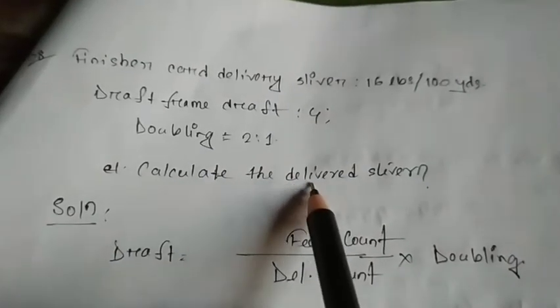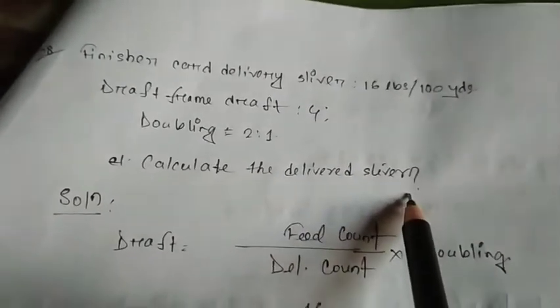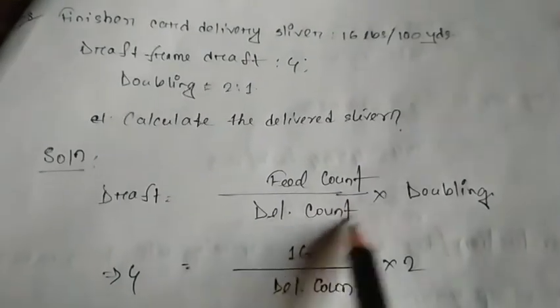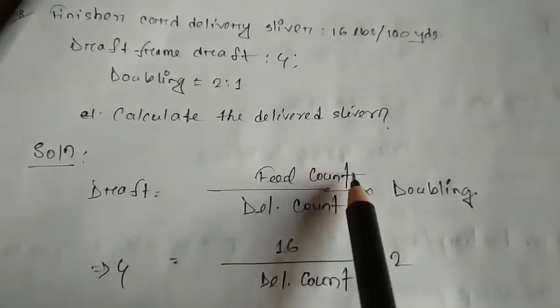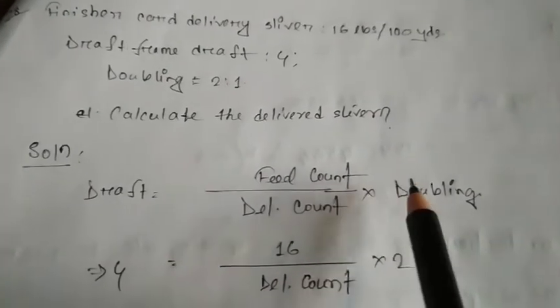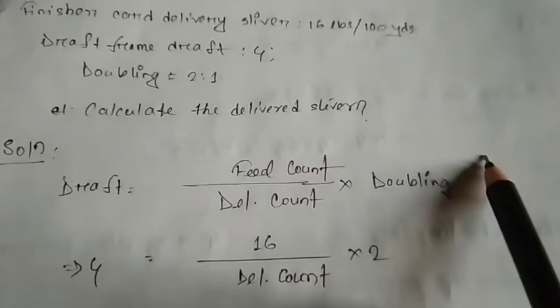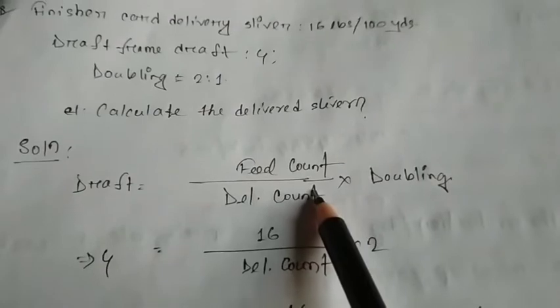Now we will calculate the delivered sliver to the draft. We have the sliver to count, so the draft count is the feed count by delivery count into the doubling. 8 is the direct count. The direct count is the direct count which is the length fixed, and the indirect count is the delivery count and the feed count.